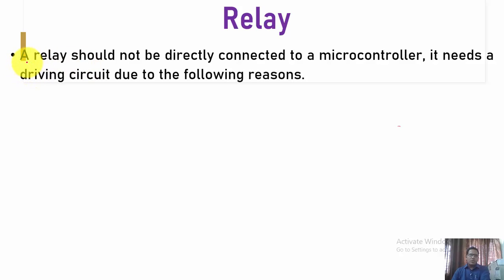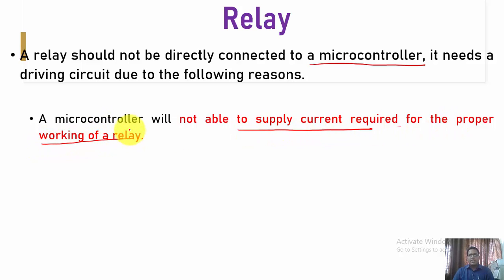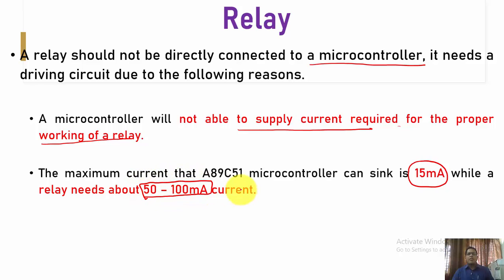A basic precaution: a relay should not be directly connected to a microcontroller — it needs a driving circuit. The microcontroller is not able to supply the current required for the proper working of a relay. A single pin is capable of providing only about 15 milliamperes, whereas a relay requires around 50 to 100 milliamperes.